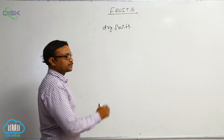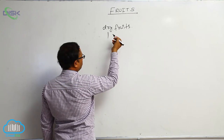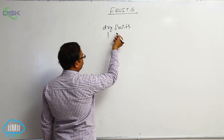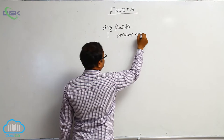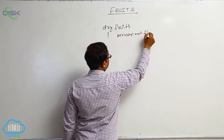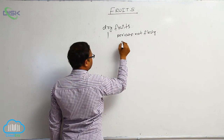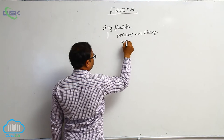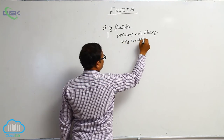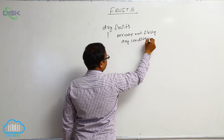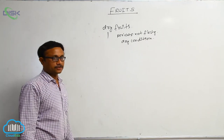Generally, dry fruits means, for example, that pericarp is a thin layer — it does not store food material, it is not fleshy. It is in a dry condition. So that is known as a dry fruit.